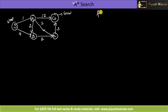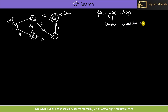In the A* search algorithm, our evaluation function is f(n) = g(n) + h(n). Here g(n) is basically the cheapest — or lowest cumulative cost — to reach node n from the root node. And h(n) is our heuristic function.